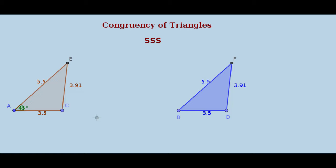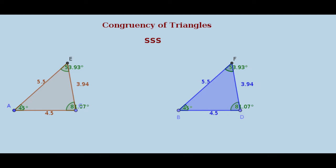Here are two triangles. If you observe, the three sides of this triangle are equal to the three corresponding sides of the other triangle. Even when I change the side lengths, the three sides of one triangle remain equal to the three corresponding sides of the other triangle. If you shift this triangle, you observe that the two triangles are congruent. We are just looking at the sides — not the angles. If the three sides of one triangle equal the three corresponding sides of the other, then those two triangles are congruent.